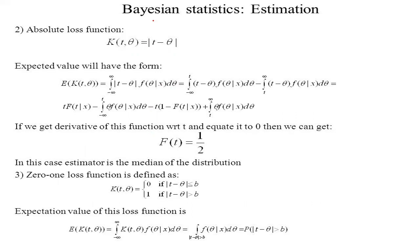In the discussion of Bayesian estimation, we encounter the absolute loss function. The absolute loss function is L(t, θ) = k · |t − θ|. Its expected value takes the form E[L(t, θ)], and we compute this expectation by integrating with respect to the elements from −∞ to ∞, thereby obtaining the value of the Bayesian estimator under the absolute loss function.